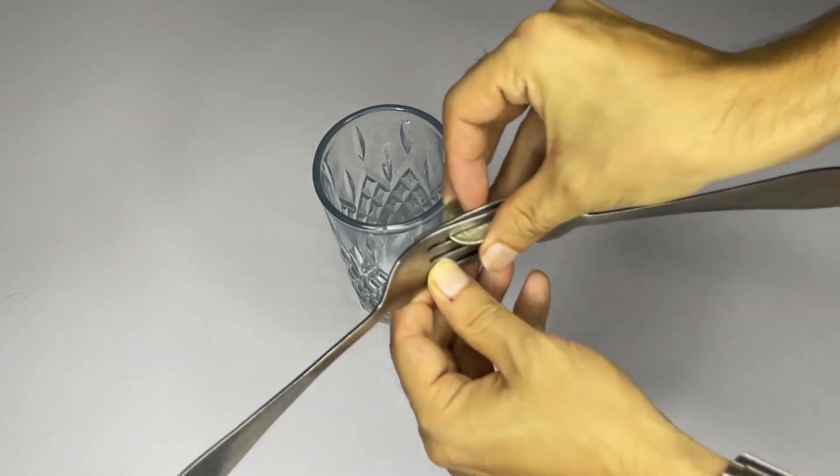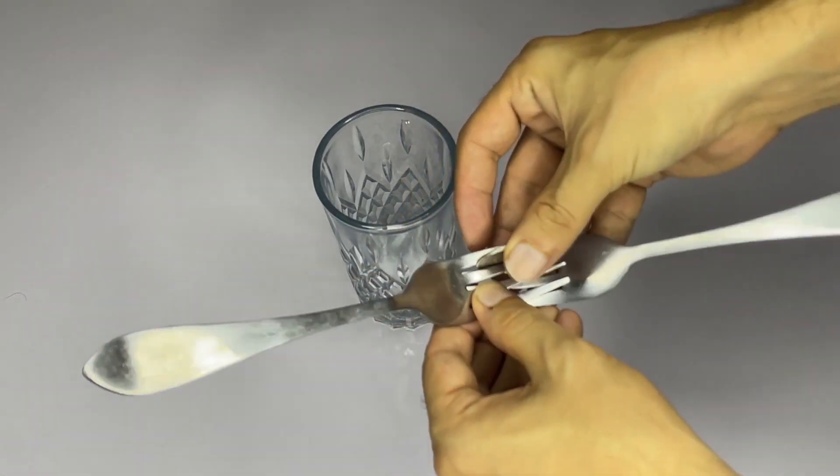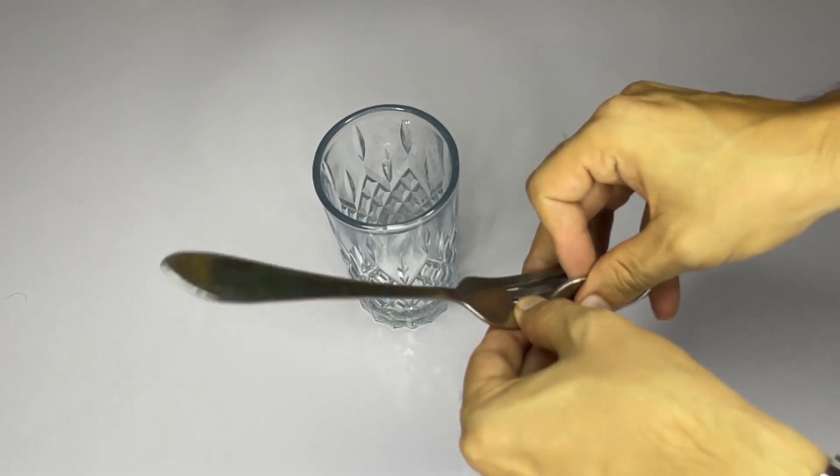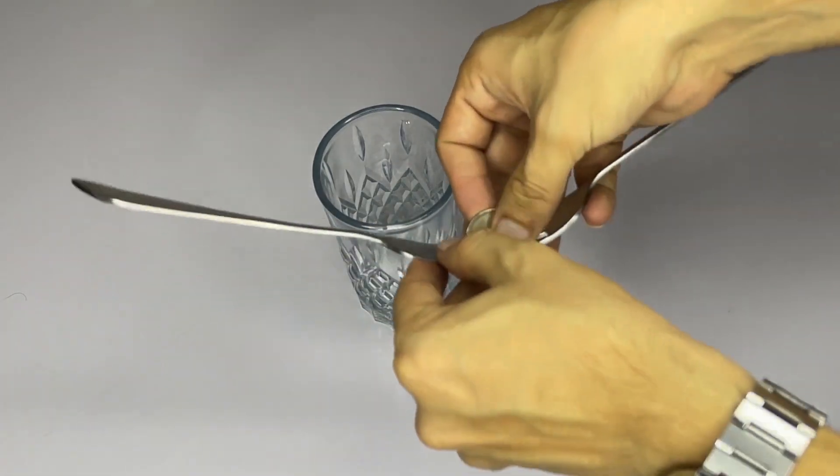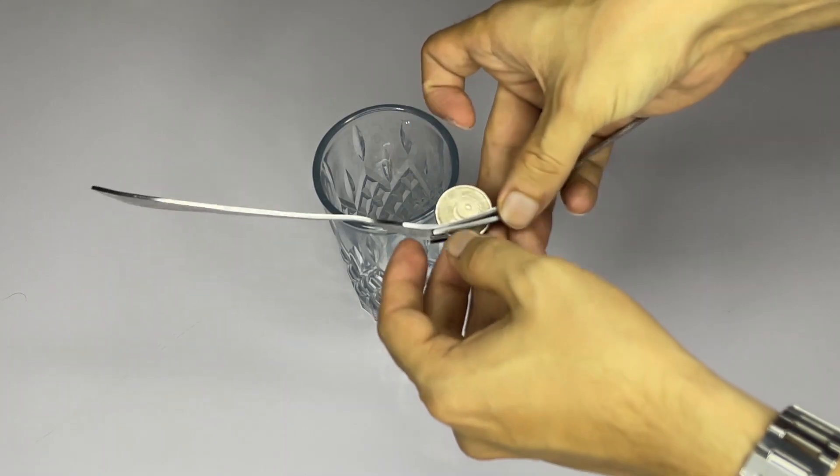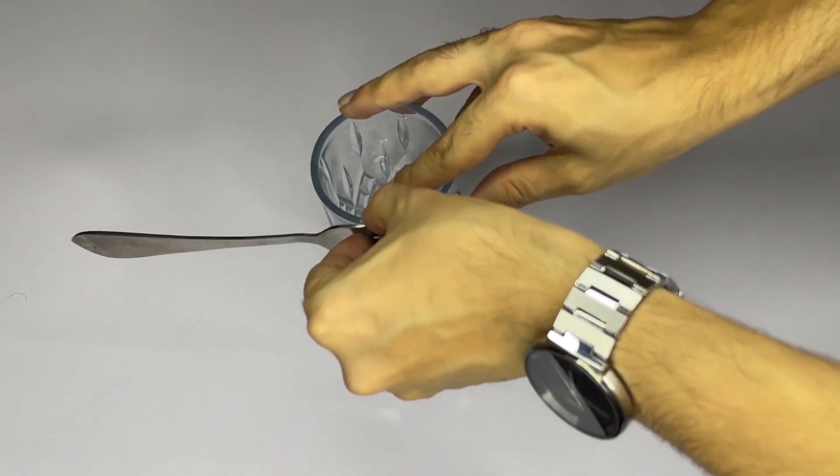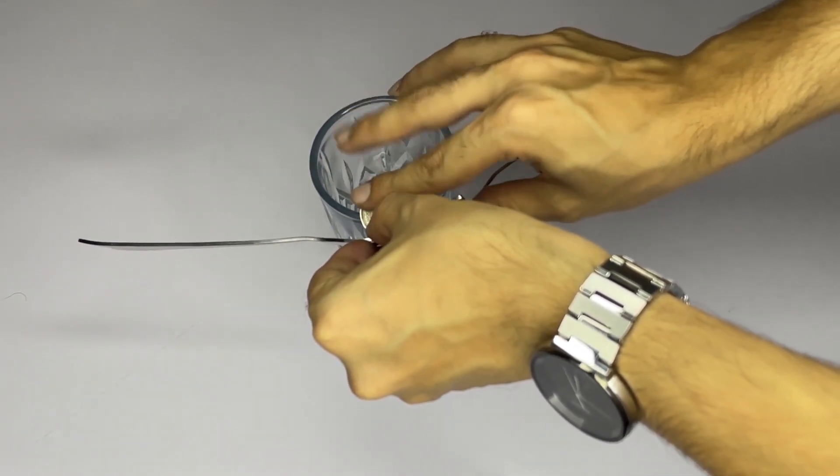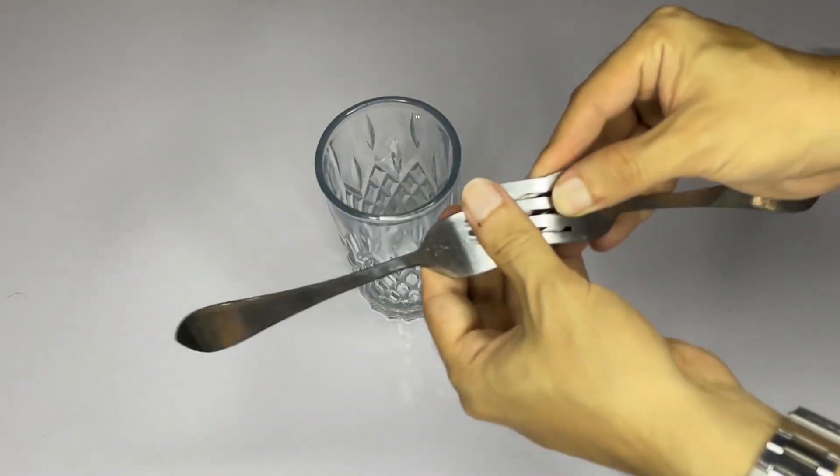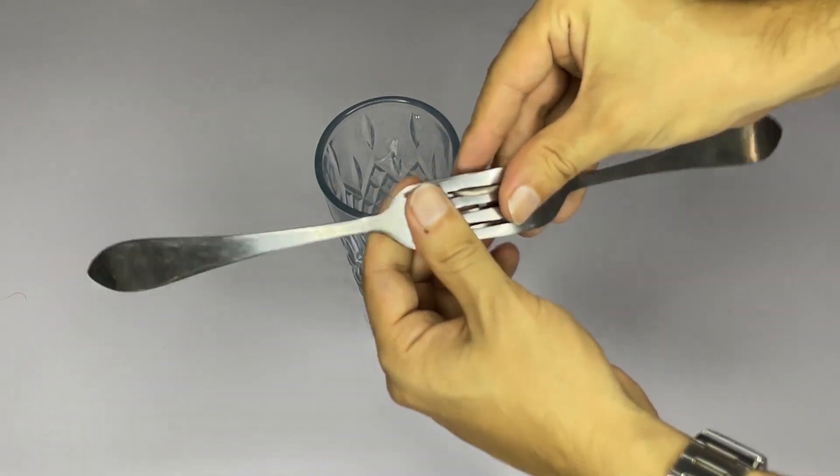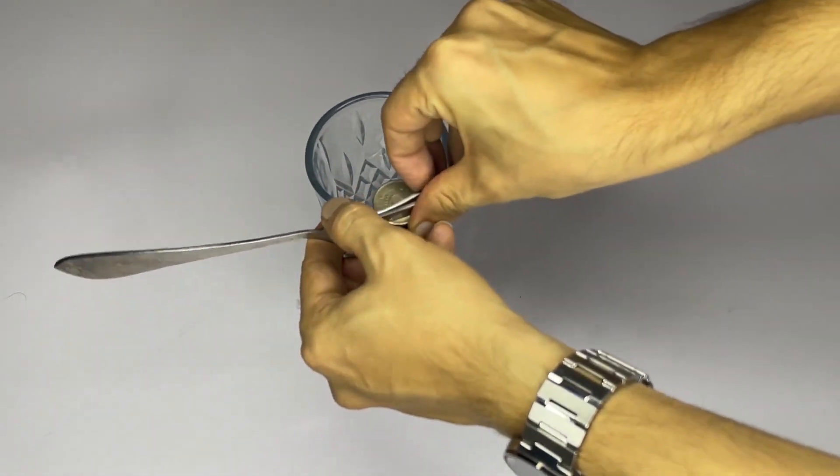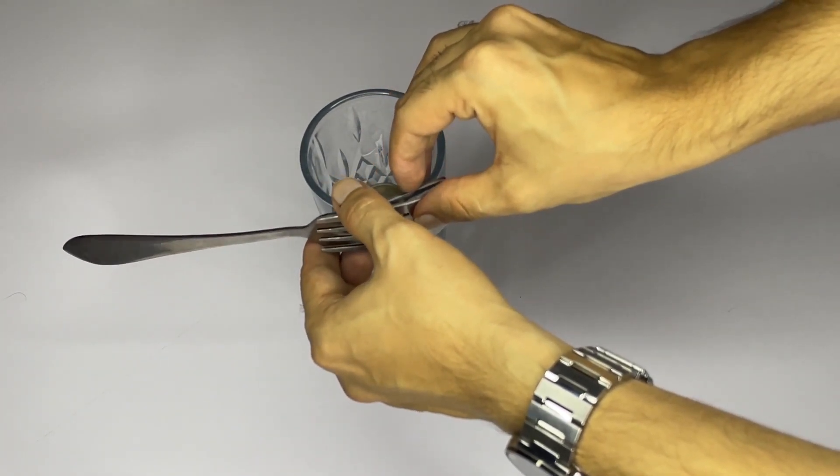Now try to place the coin with forks on the edge of the glass. It will take you some time to adjust the coin on the edge. This requires a little practice to adjust the coin on the edge of the glass.